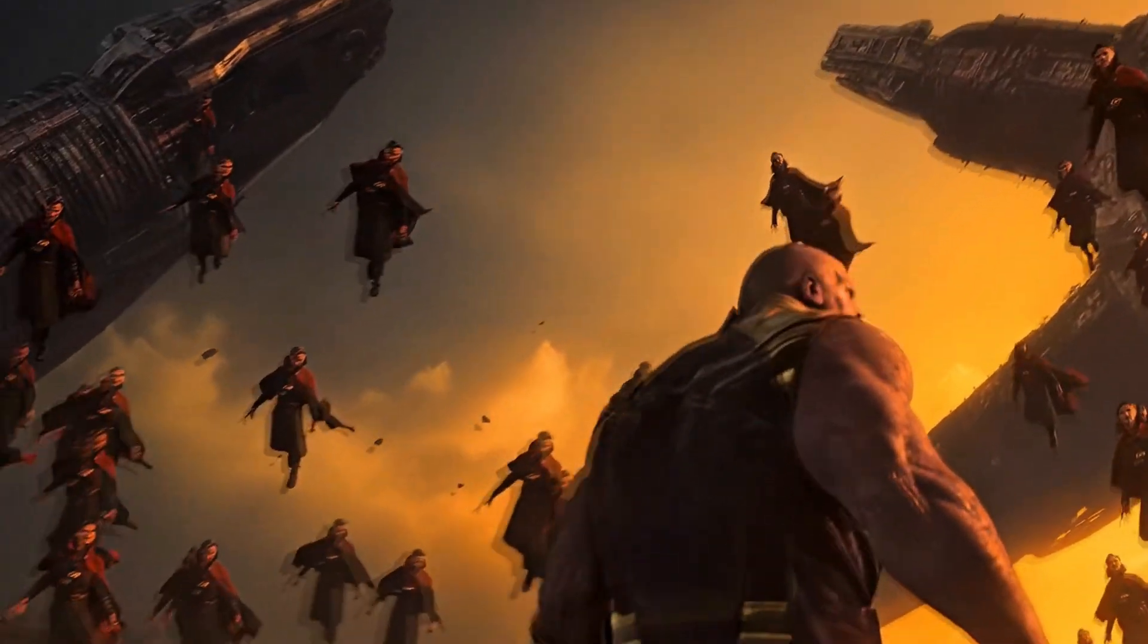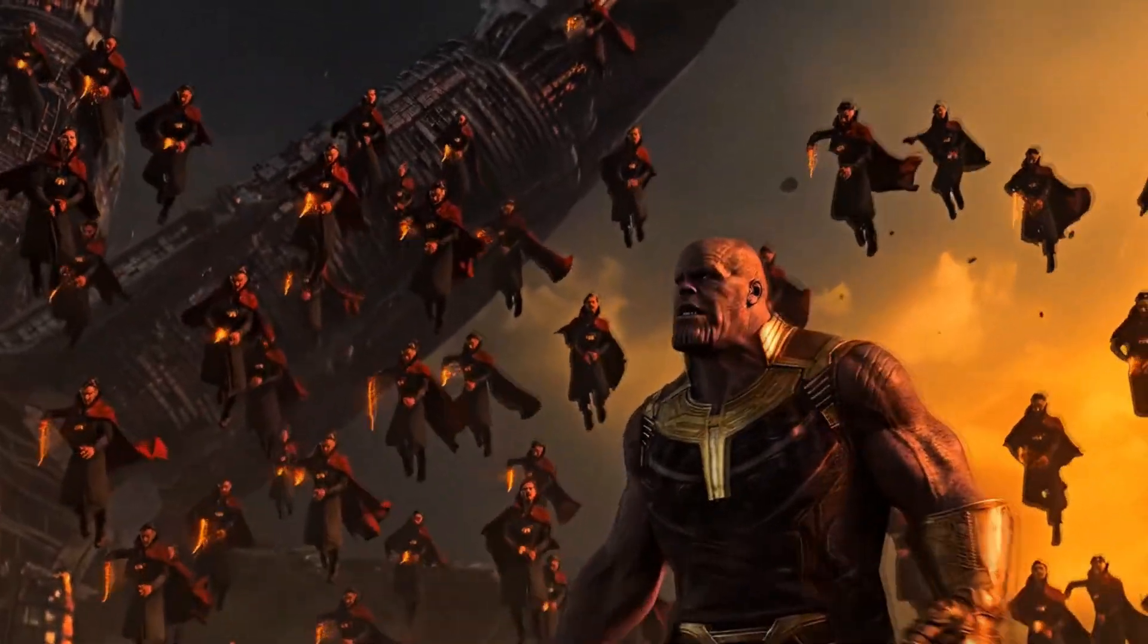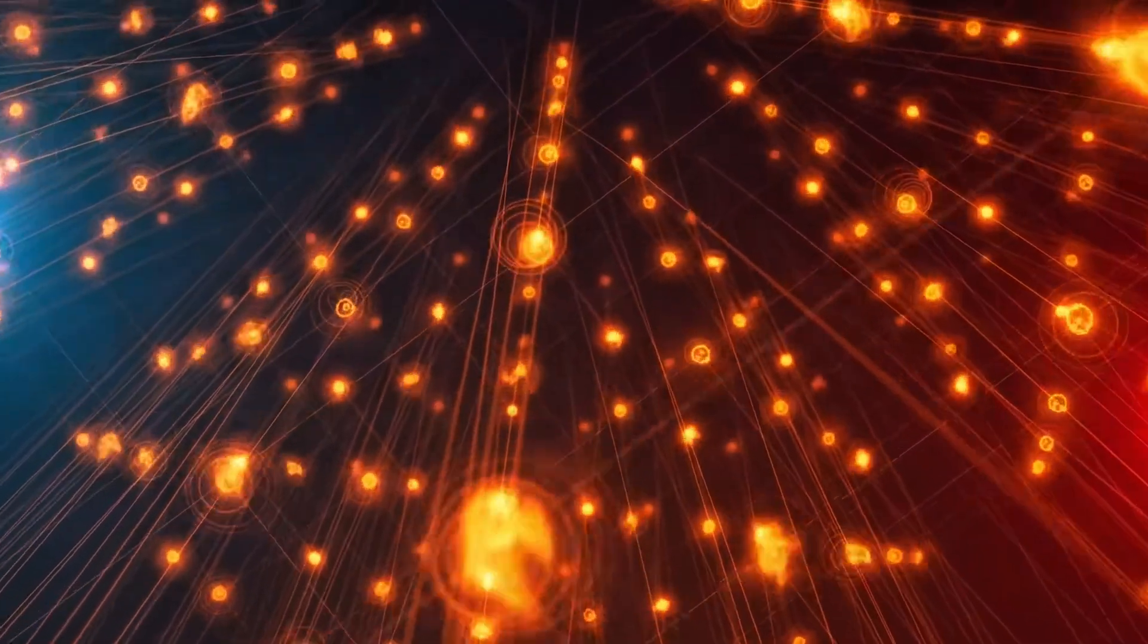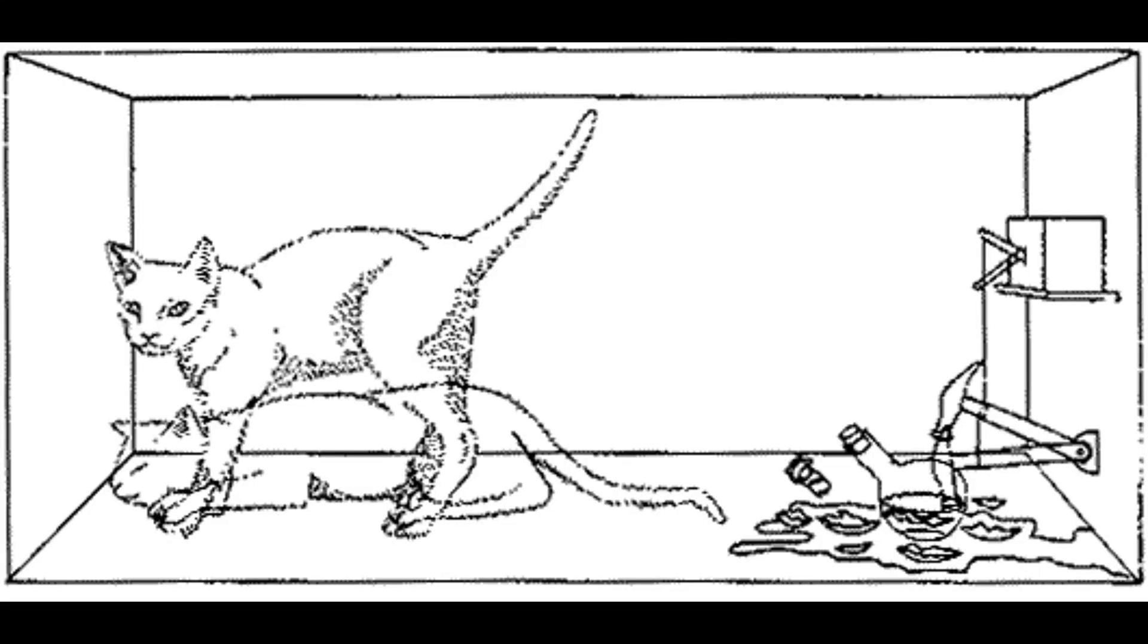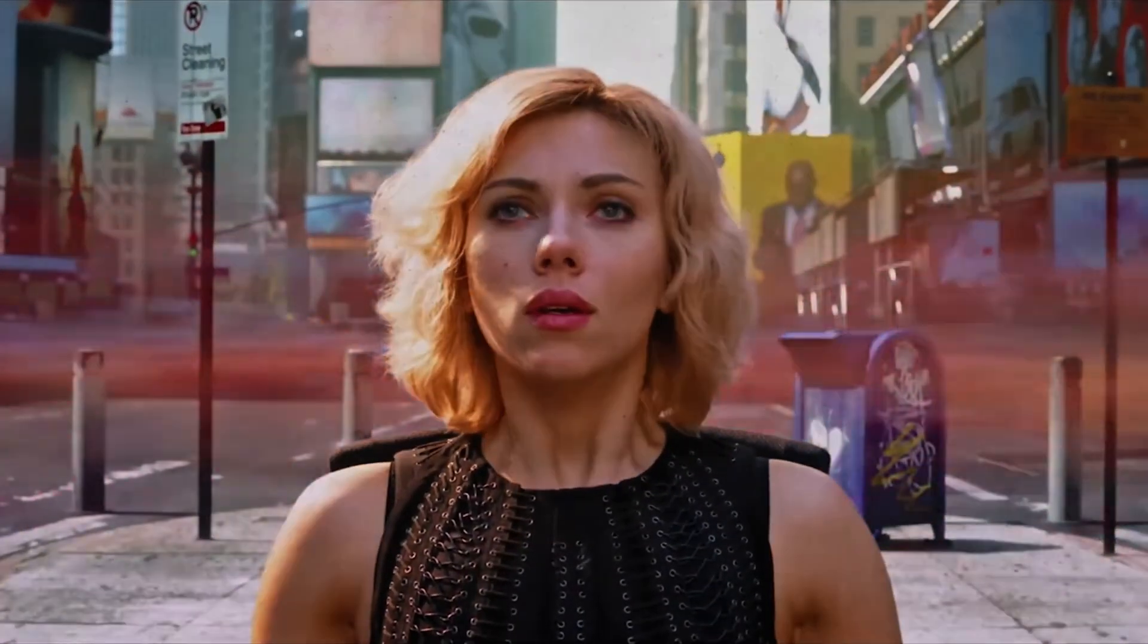Quantum superposition: In the quantum world, one thing can be in many states at once. A particle can be here and there, spinning up and down at the same time. Like Schrodinger's cat, it's both alive and dead until someone checks. Reality isn't fixed until you look.